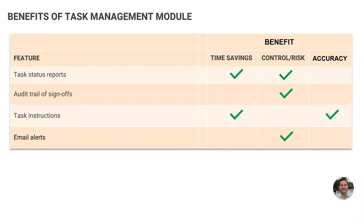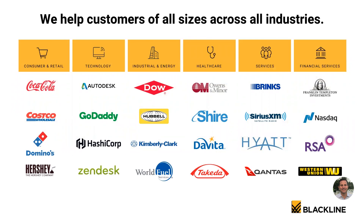Let's review some of the task management module key benefits. The biggest one is the task status reports — you can quickly see which tasks are completed and which aren't, eliminating the need for status meetings and emailing status updates. It provides an audit trail of sign-offs, recording who marked a task complete and when. Each task can be populated with task instructions so all users, including new employees, know how to complete it. And email alerts are sent when a task becomes overdue. Both small and large companies across all industries use the system, and there are case studies available — just let us know if you're interested.